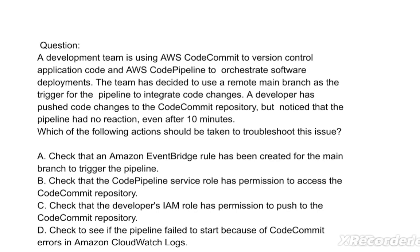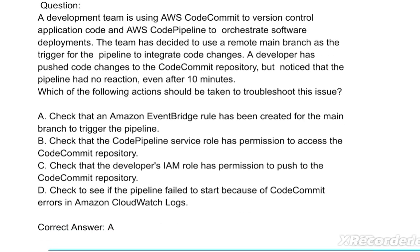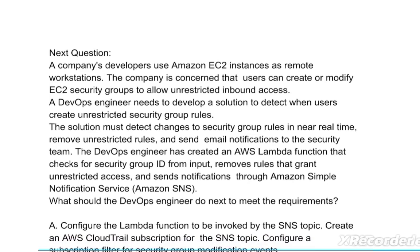Which of the following actions should be taken to troubleshoot this issue? Option A: Check that an Amazon EventBridge rule has been created for the main branch to trigger the pipeline. Option B: Check that the CodePipeline service role has permission to access the CodeCommit repository. Option C: Check that the developer's IAM role has permission to push to the CodeCommit repository. Option D: Check to see if the pipeline failed to start because of CodeCommit errors in Amazon CloudWatch Logs. The correct answer is Option A.